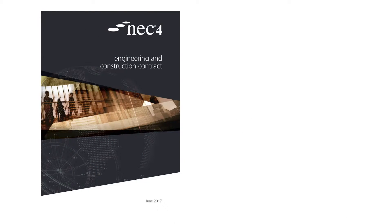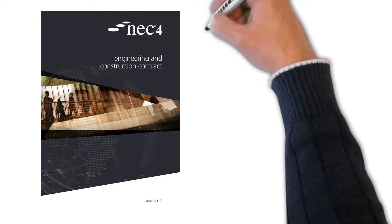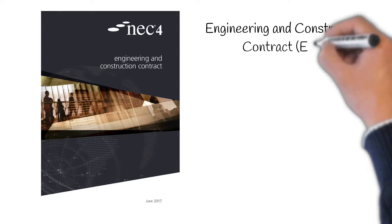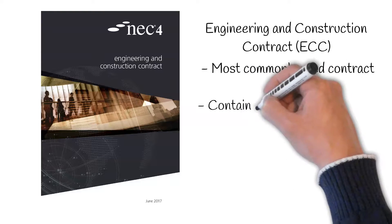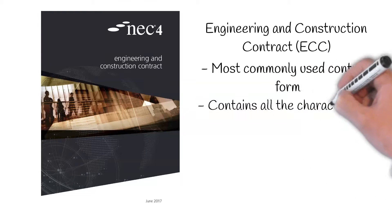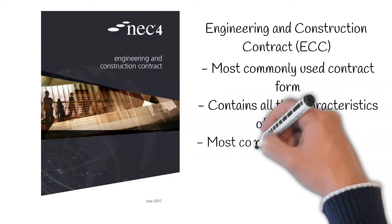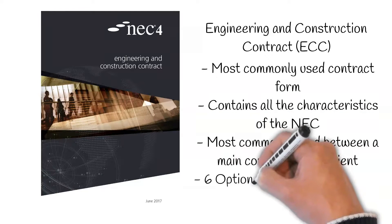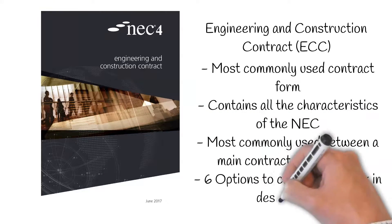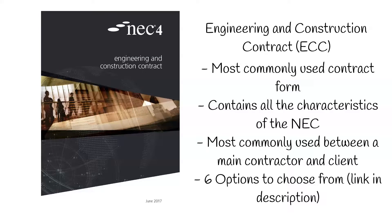The contract forms which fall under the NEC are as follows. Engineering and Construction Contracts, or ECC. This is the most commonly used contract form and contains all the characteristics of the NEC. This contract is mostly used between a main contractor and a client. Within this contract, there are 6 options of which the employer will choose what they believe will achieve the best value. If you'd like to know more about these options, there will be a link in the description of this video.